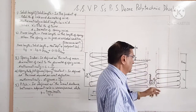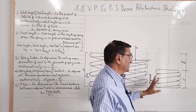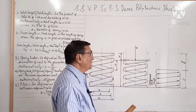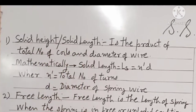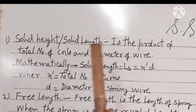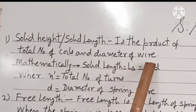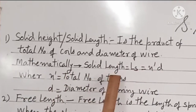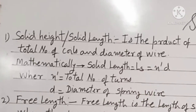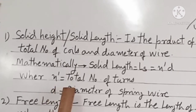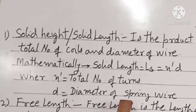In solid length, the adjacent coils are nearly in contact with each other. Solid height, generally known as solid length, is the product of total number of coils and diameter of wire. Mathematically, solid length Ls is equal to N' × d, where N' is the total number of turns and d is the diameter of the spring wire.